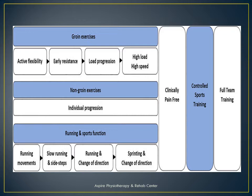Once you have diagnosed that a patient has got an adductor related injury, the first goal is to minimize the pain. After that, increase the flexibility of that muscle, then increase the strength of that muscle. Slowly you progress load, giving high load and high speed — that is agility kind of activities. While doing this, you also focus on non-groin exercises because you are treating one particular part of that athlete's body, but you have to maintain full body fitness. You don't want them to lose all the training effect they had before the injury, so you ask them to do all other non-groin exercises as well.